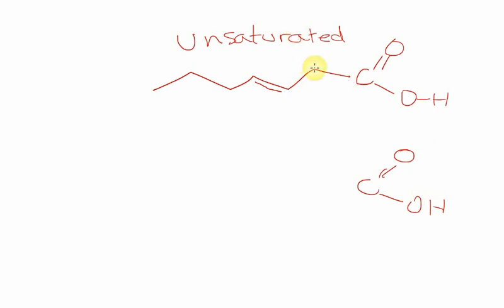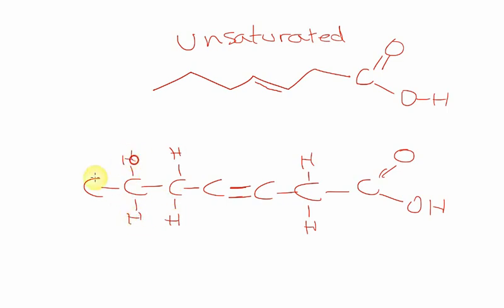So if I were to draw this, again, each bend in the chain is a carbon. So I have one, two, three, four, five, six carbons here. And my double bond is between the third and fourth carbons. So, again, all of my carbons that are single bonded are going to have two hydrogens attached. The final carbon is going to have three hydrogens attached. But these two carbons that are next to the double bond each only have one hydrogen attached because this is unsaturated. The chain is not saturated with hydrogen because we have a double bond instead.